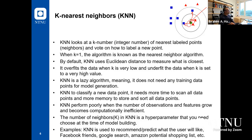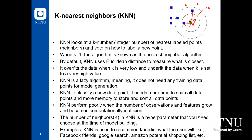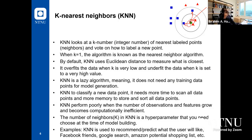KNN is a lazy algorithm because it's computationally inefficient — each time we need to calculate Euclidean distance between the new example and all data points. We need to keep all examples in memory. For privacy and GDPR reasons, it might be impossible to keep data points on your computer. KNN needs more time to scan all data points and more memory to store them. It performs poorly when the number of observations and features grows.